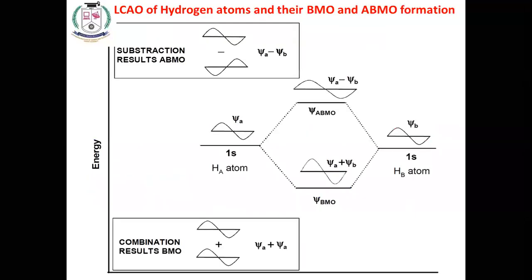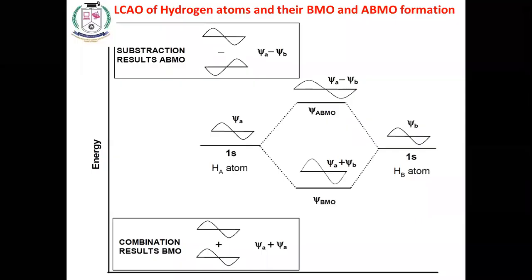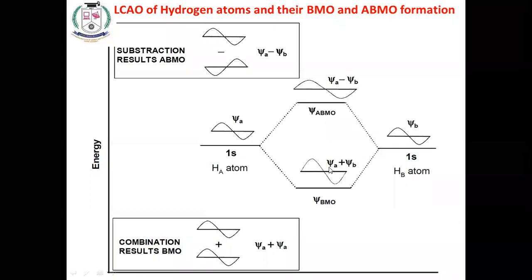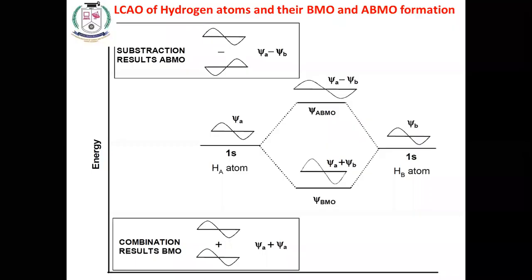Let us take two hydrogen atoms, HA and HB, with wave functions written as psi A and psi B. If these two wave functions combine, what happens? First, due to attraction or combination, if the positive sign of psi A mixes with the positive sign of psi B, the bonding molecular orbital forms — written as psi BMO. Similarly, if the positive sign of psi A combines with the negative sign of psi B, psi ABMO — the anti-bonding molecular orbital — will form.